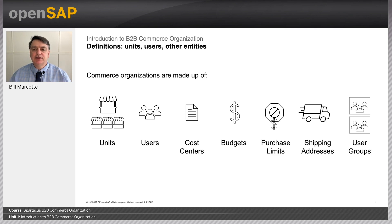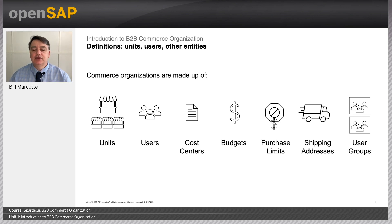You create users and assign them to all these units you're creating. Some of the users represent buyers, some are administrators, and some are approvers — people who approve purchases made by buyers when they go over a certain limit. Each unit is assigned at least one cost center, which is used for tracking spending and is what the buyer selects when they check out. Budgets are assigned to cost centers and allow you to limit overall spending collectively, as purchases count against a budget.